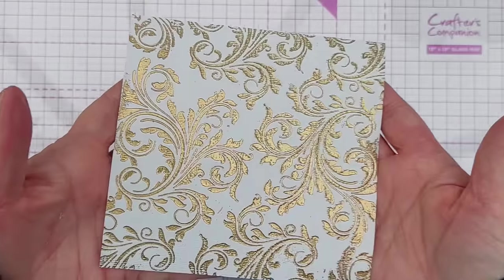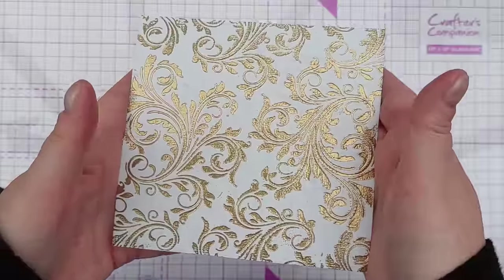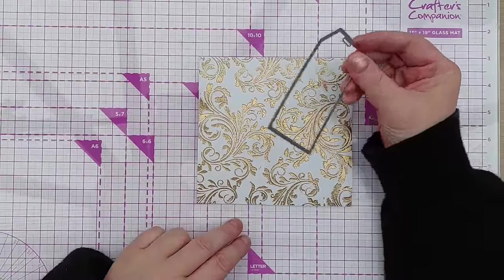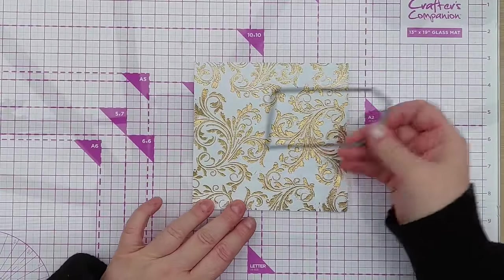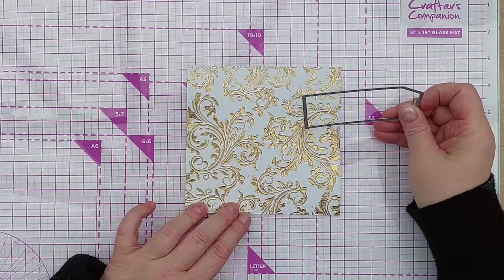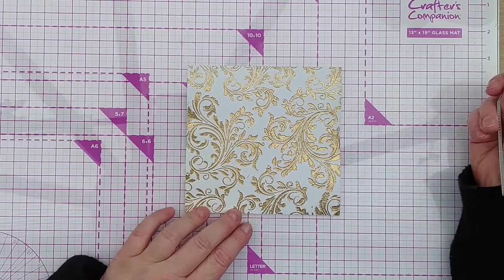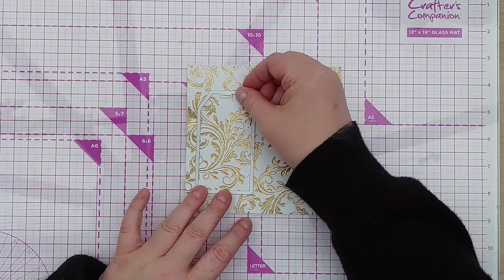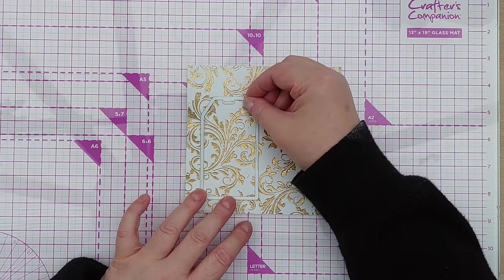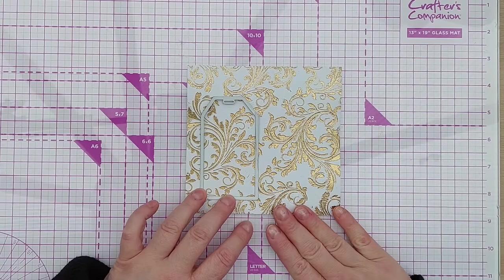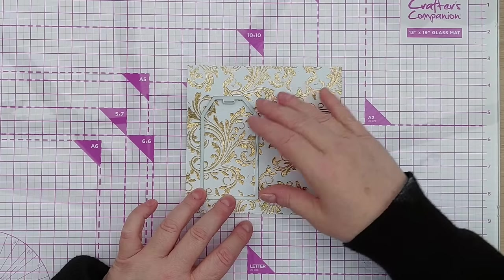So there we have a really gorgeous gold debossed piece of paper. Now I'm going to cut out a tag from this. This area is a bit cleaner, this has got a bit of extra embossing powder so the pattern's not quite so clear. But I think what I'll do is go for this cleaner side and capture this big swirl here.